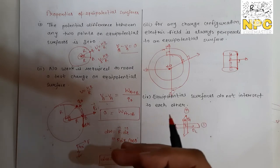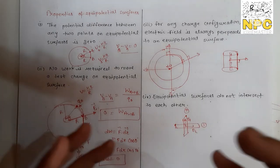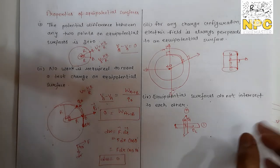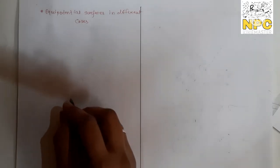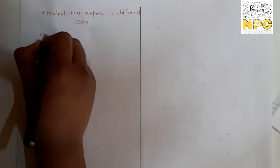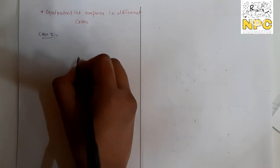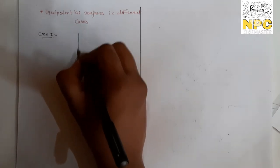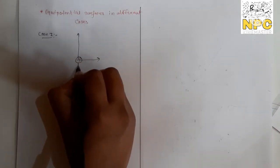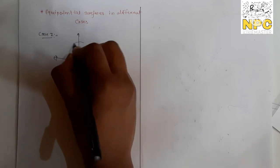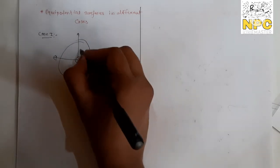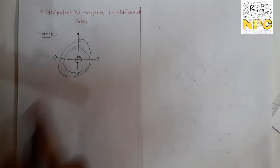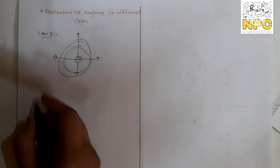Now let's look at different cases showing how to draw equipotential surfaces for different charge configurations. Case 1: For a point charge, the equipotential surface is always a sphere. You can draw it as a sphere of a given radius around the point charge.